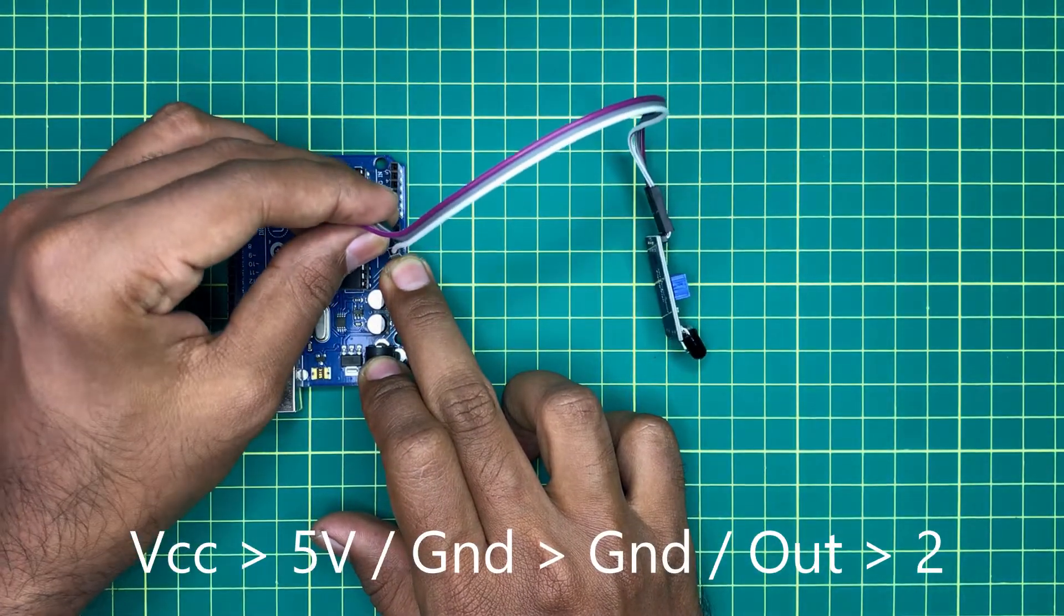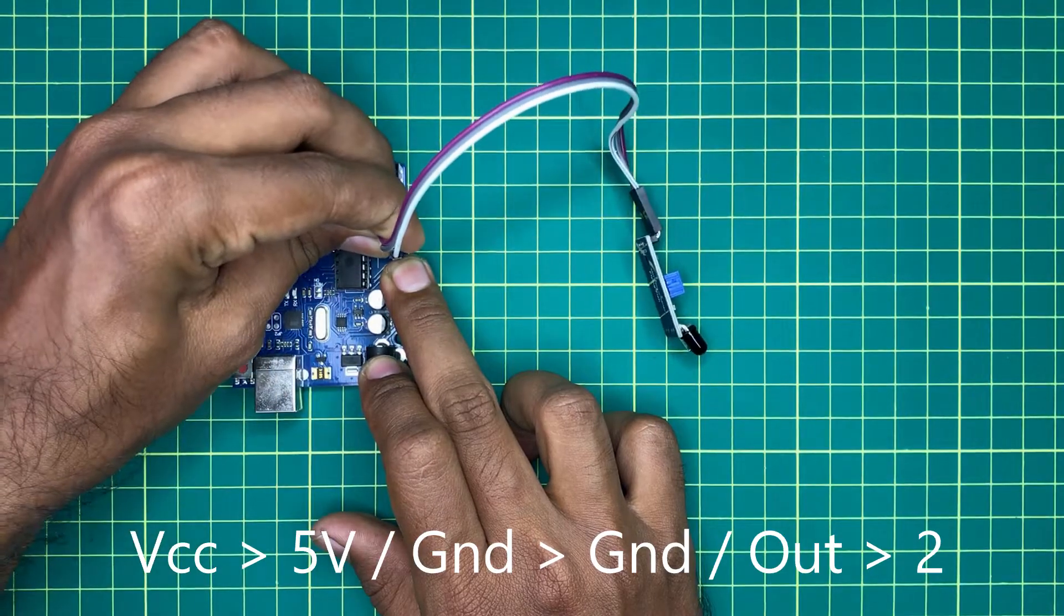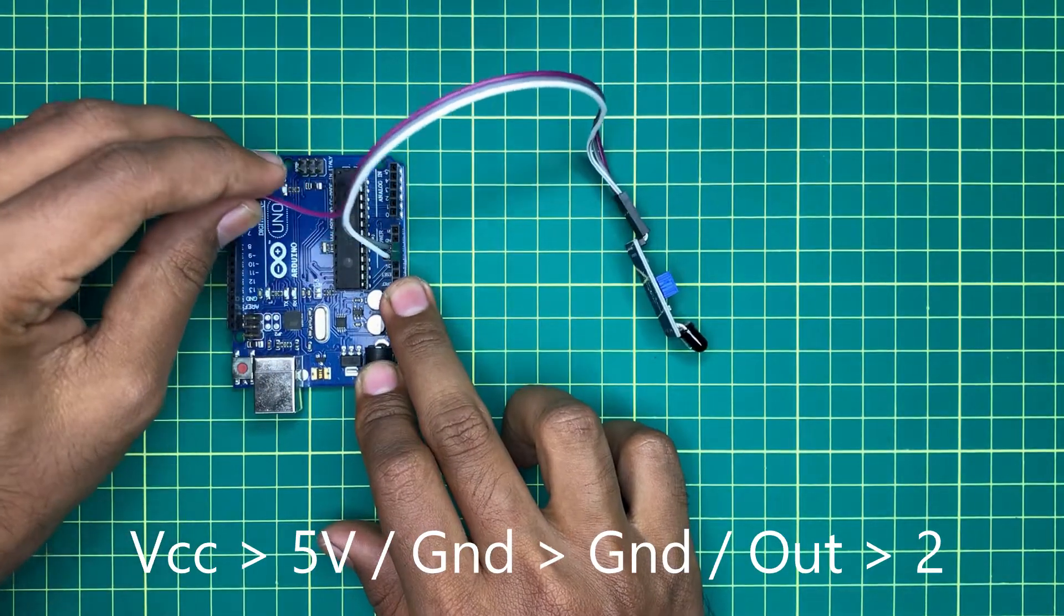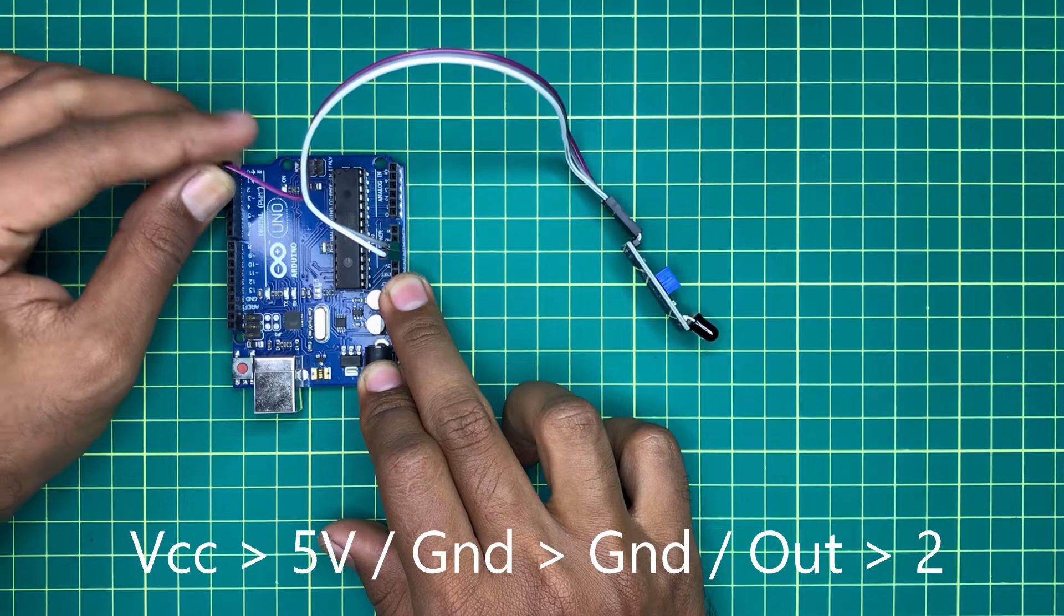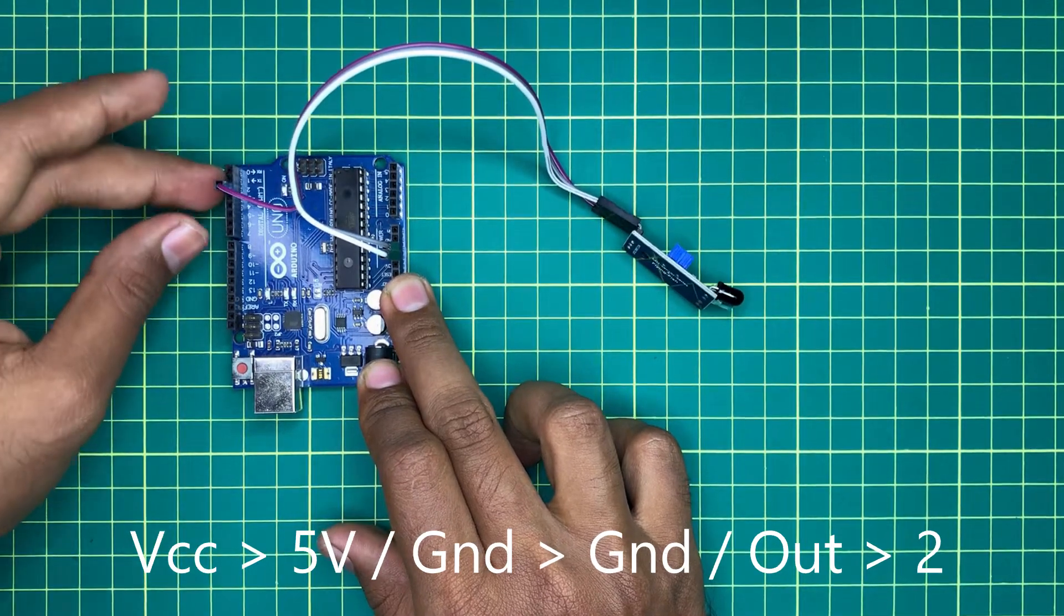Next, connect the ground pin of the sensor with the ground pin of the Arduino. Finally, connect the out pin with digital pin 2 of Arduino.